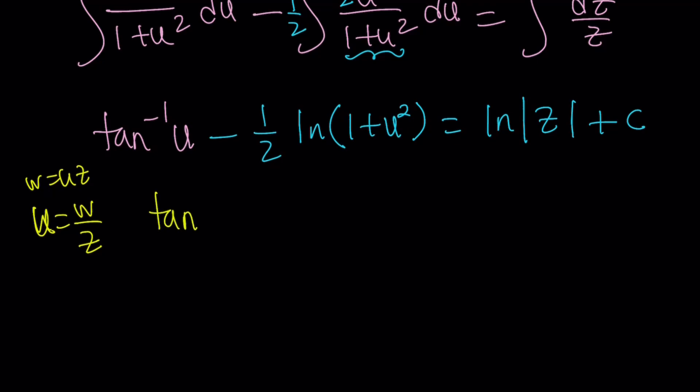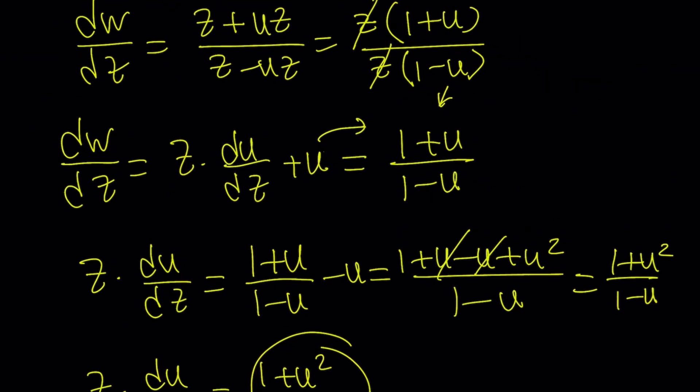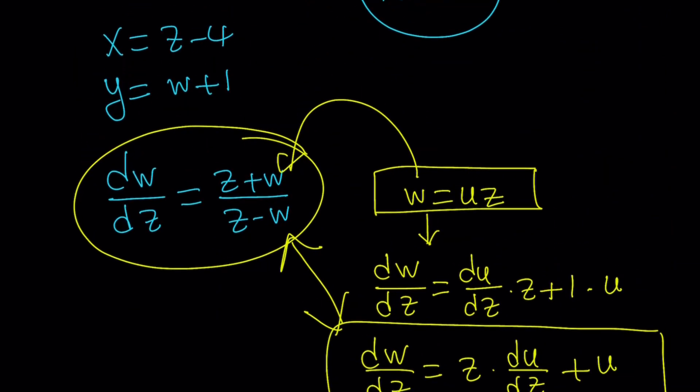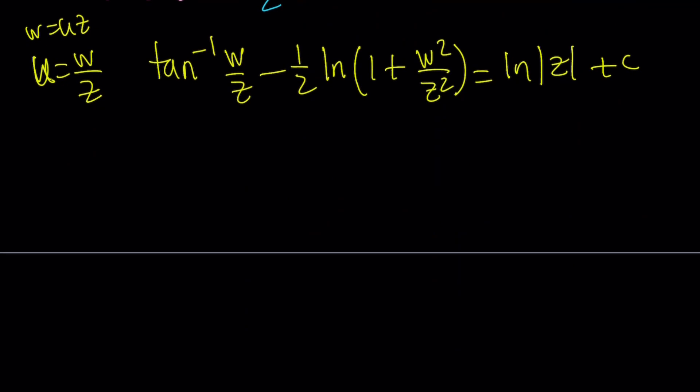And, I have ln absolute value of z plus c. Now, let's go ahead and think about w and z, what they are. Remember, we had our substitution, and we got rid of the constants that way. So, this is the formula for our substitution, x equals z minus 4, and y equals w plus 1. And, we're just going to use those to evaluate w and z.